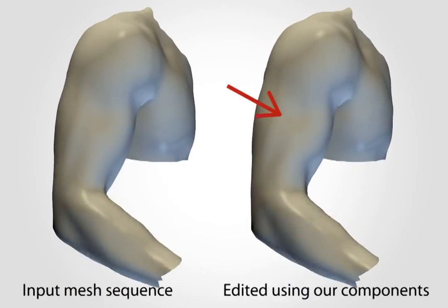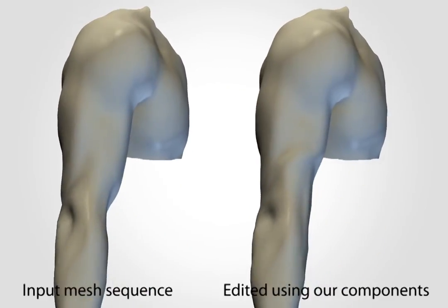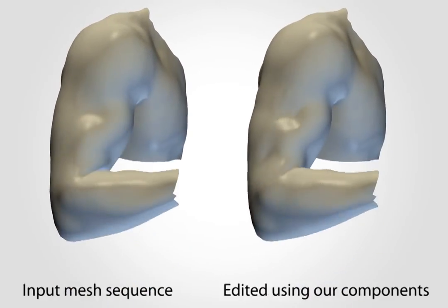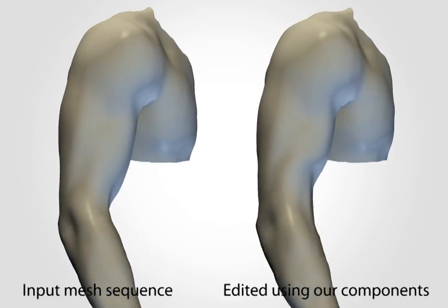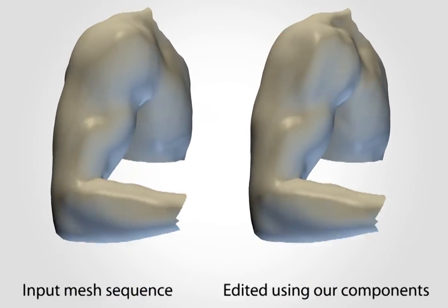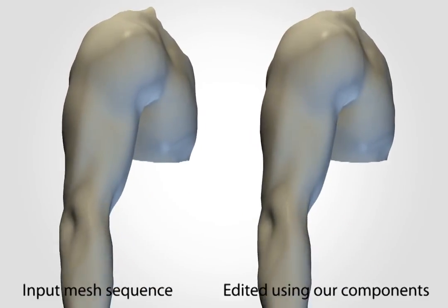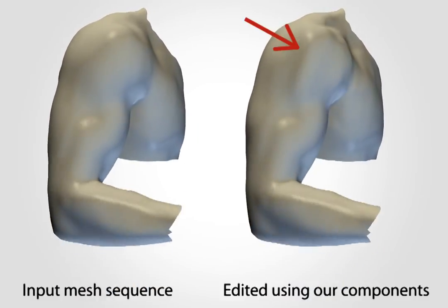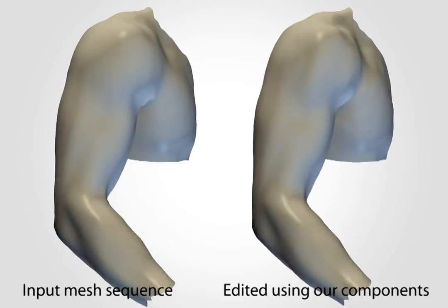We can control the activation of a single component to achieve targeted effects, like this twitching of the deltoid muscle, even if anatomically implausible.